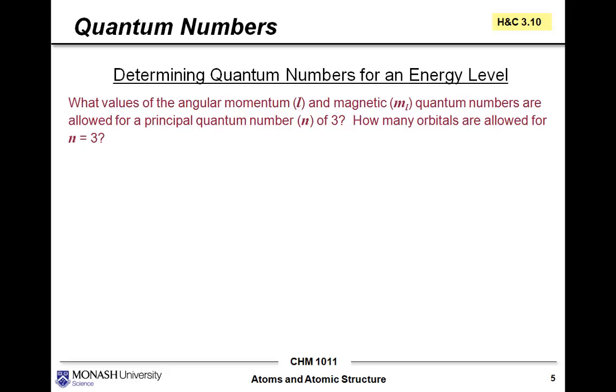Here's a question about quantum numbers: determining quantum numbers for an energy level. What values of the angular momentum l and magnetic ml quantum numbers are allowed for a principal quantum number n of 3? Let's draw this. If n equals 3, l can equal 0, 1, or 2.